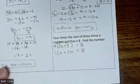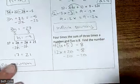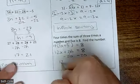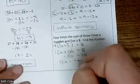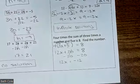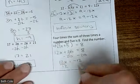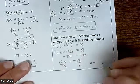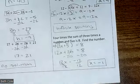All right, then what? Minus 20. So 12x equals 8 minus 20, which will be negative 12. And then divide by 12 — x equals negative 1.